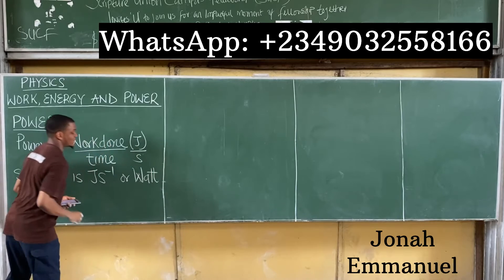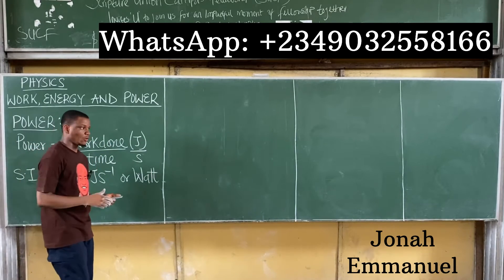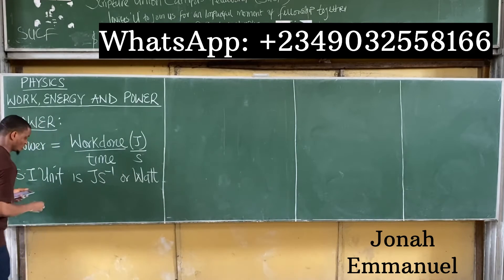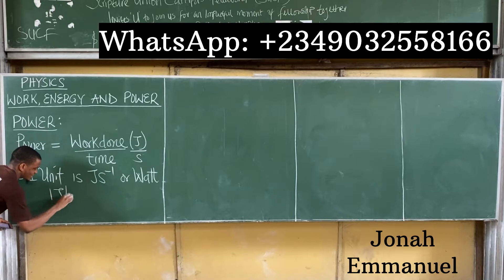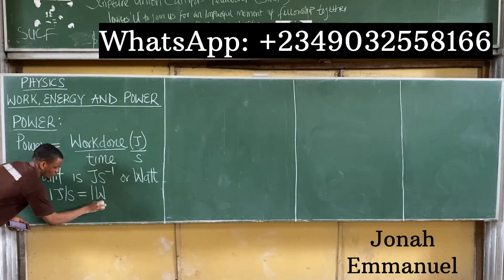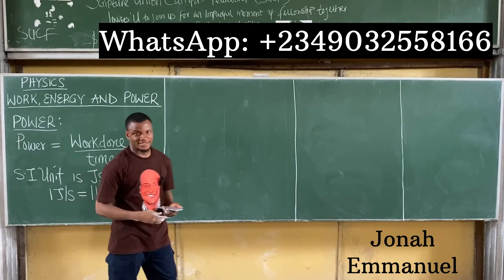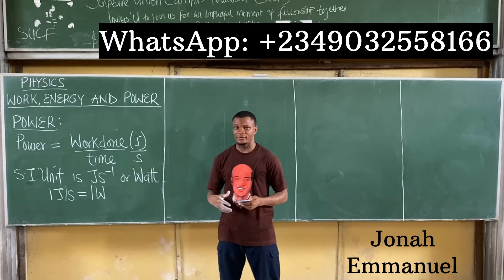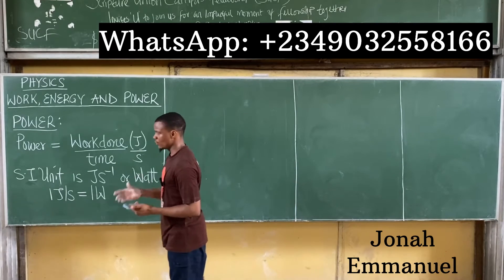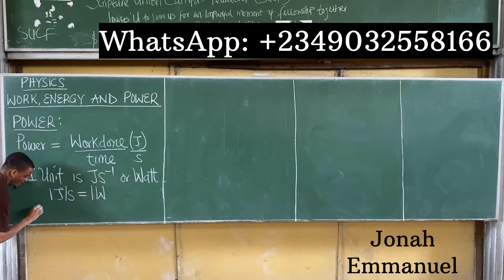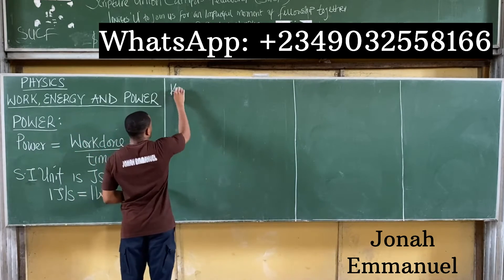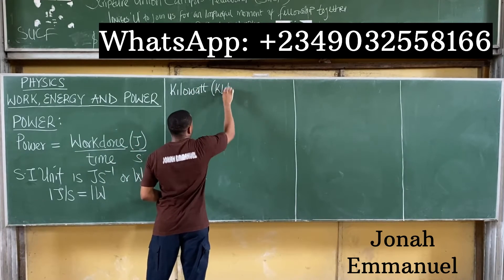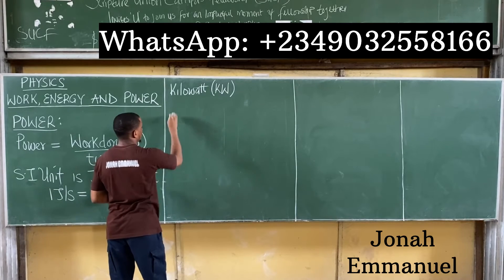Power is measured in joules per second or watts. The relationship is that one joule per second equals one watt (capital W). Apart from watts, other units for measuring power include kilowatts (kW).